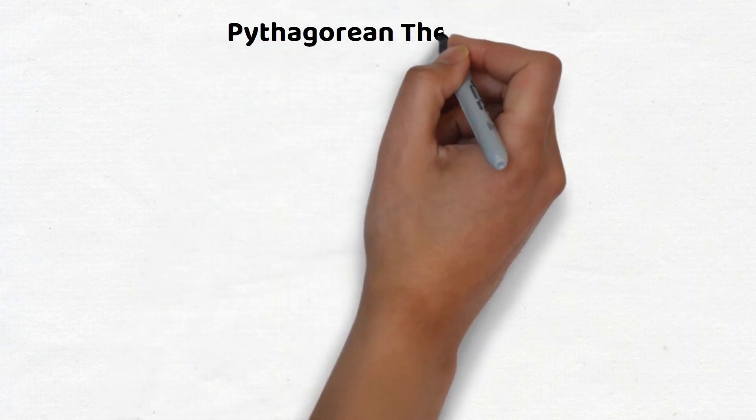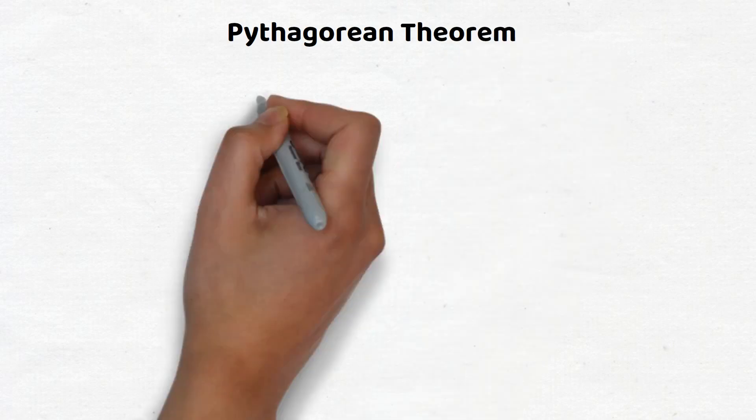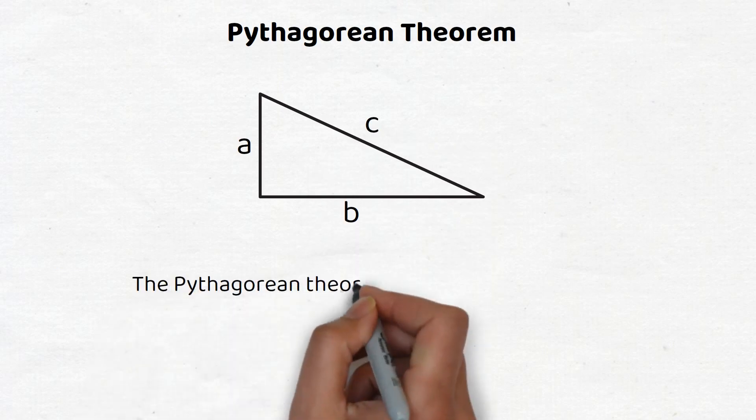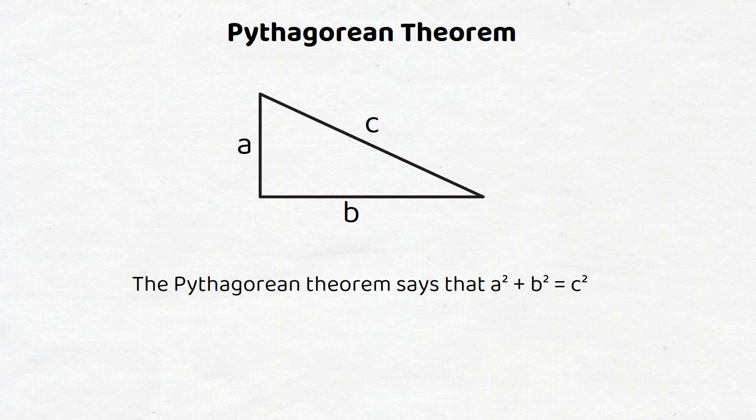The Pythagorean Theorem. Consider a right triangle with the two shorter sides of a and b and a longer side of c. The Pythagorean Theorem says that a squared plus b squared equals c squared.